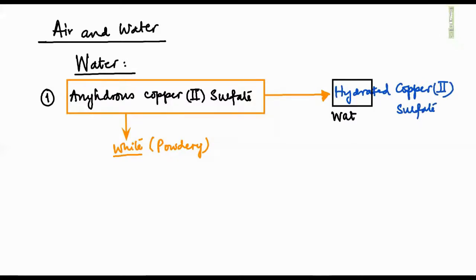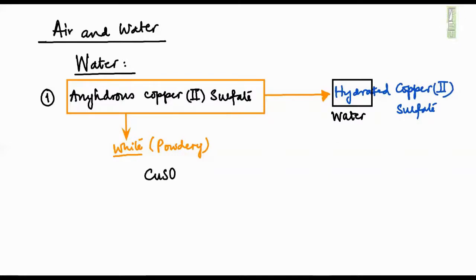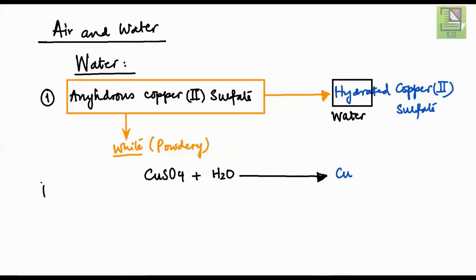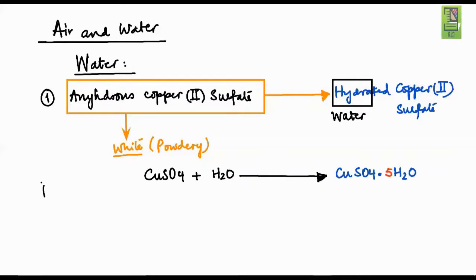Now we're going to see the chemical reaction: CuSO₄ combines with H₂O. It is not actually a chemical reaction — water molecules are just held between the crystals of copper sulfate. There are five water molecules held in the crystal lattice of CuSO₄ with each formula unit, giving CuSO₄·5H₂O.